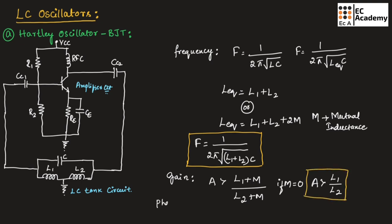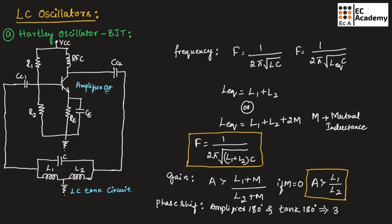Regarding phase shift: the amplifier will produce a 180-degree phase shift and the feedback stage or tank circuit will also produce a 180-degree phase shift. So the overall phase shift will be 360 degrees or 0 degrees. This is the working of the Hartley oscillator.